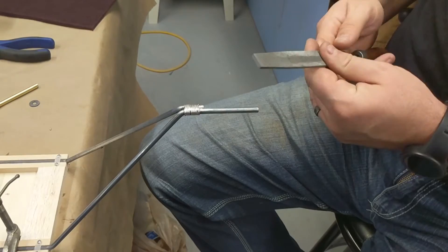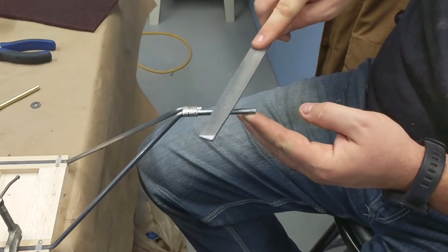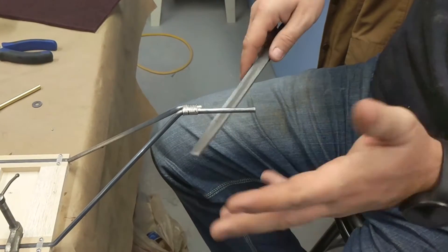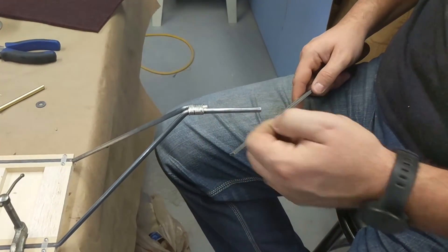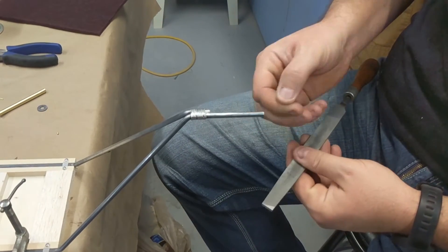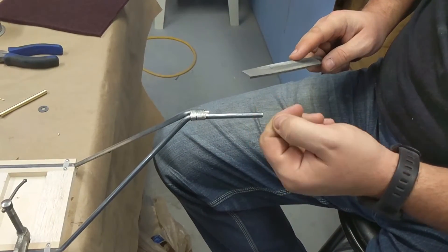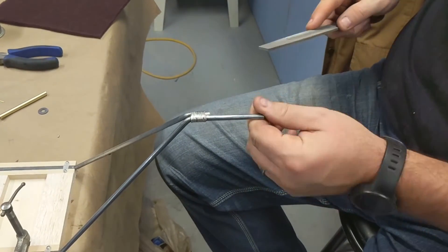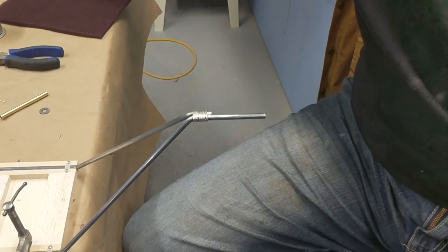And then it doesn't hurt to take a file and just file a little bit on - I already did this all the way around - that'll give something for the solder to bite into a little bit more. Also sometimes the brass tube won't slide on very good because there's a little lip on the edge, so if you just file a little chamfer on the end of the axle there, that works good.